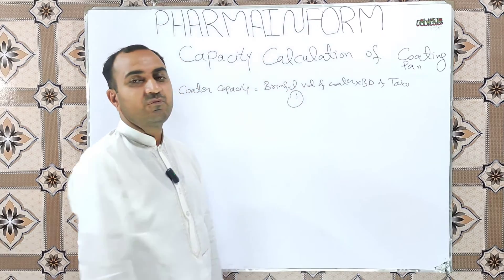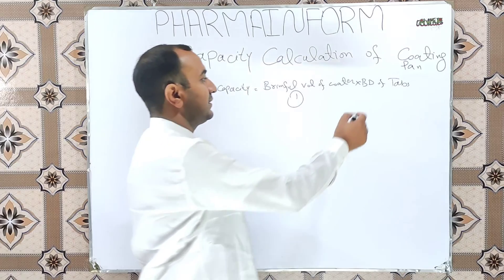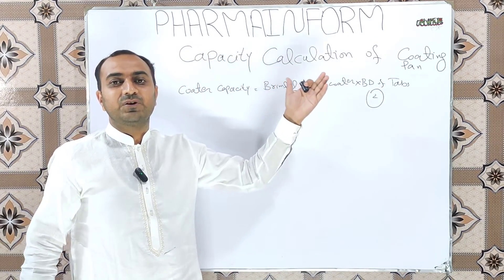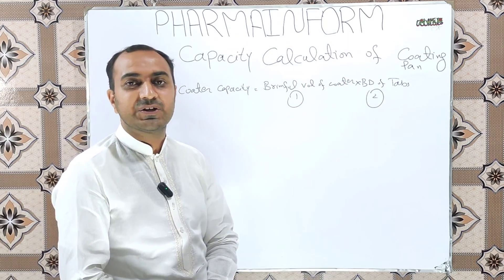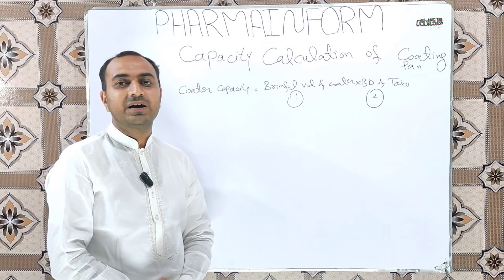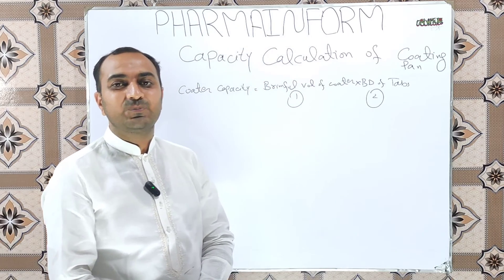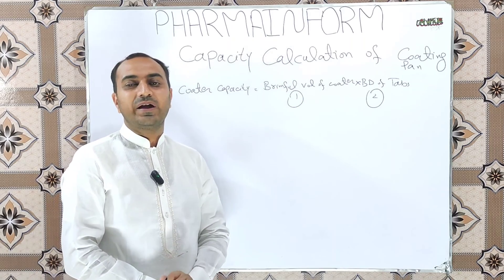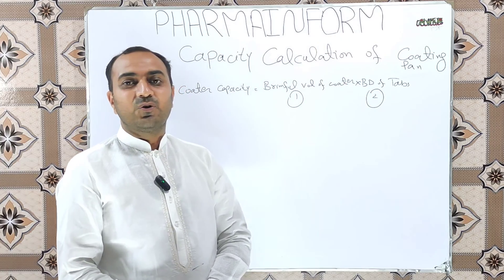One is the brimful volume of the coating pan and second one is the bulk density of our tablet. The bulk density of the tablet will vary according to the tablet weight, size and shape, and the brimful volume of the coater remains constant. The brimful volume of the coating pan is provided by the vendor and we will take it as a reference value and then multiply it with the bulk density of the tablet.